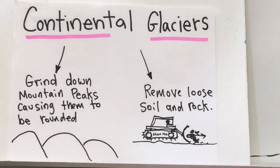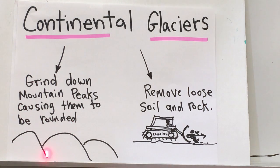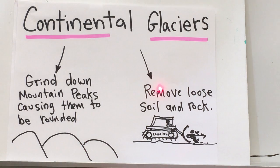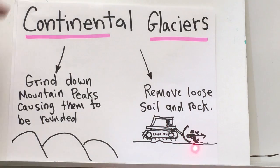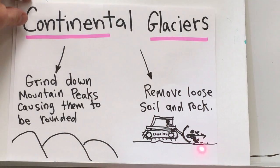Continental glaciers grind down mountain peaks, causing them to be rounded. Continental glaciers remove loose soil and rock — they push it away like a bulldozer.